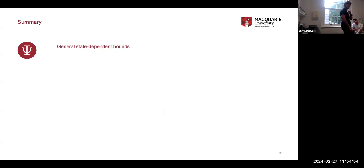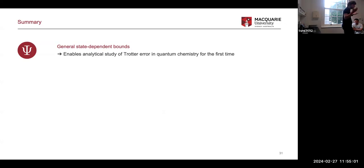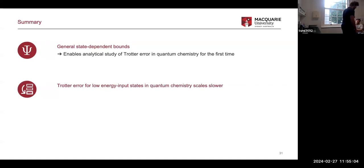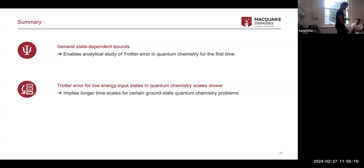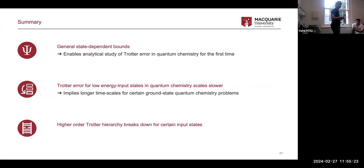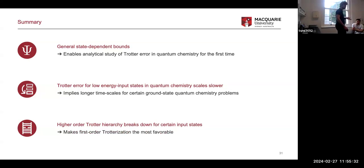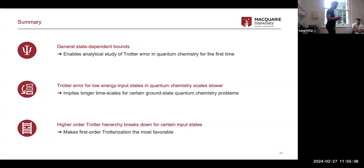To summarize: we provide general state-dependent bounds, so we can now compute Trotter errors analytically for previously inaccessible cases. For certain states, the Trotter error scales slower than what people usually claim, meaning in practice it might take a bit longer to implement these quantum chemistry tasks. The higher-order formula hierarchy breaks down for states with slower scaling, so we want to use first-order trotterization for these states.